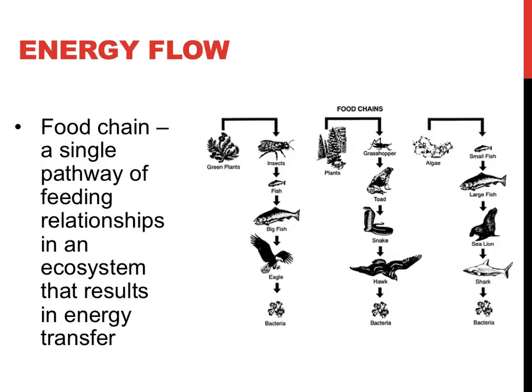If you wanted to look at the linear feeding relationships between organisms — how energy flows within a community, what organisms are predators and which are prey — you could look at a diagram called a food chain. At the bottom of each food chain there is a producer, then you may find a series of consumers, and finally at the top you would find a detritivore and decomposer.